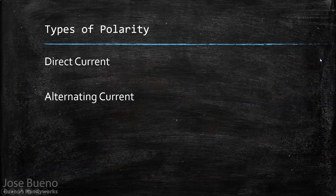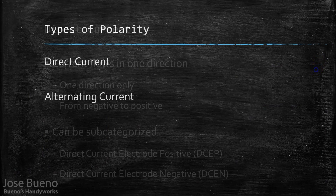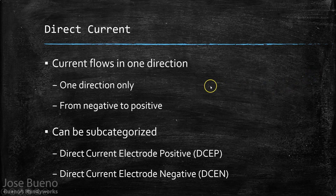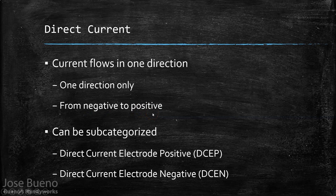There are two main types of polarity: direct current and alternating current. In direct current, electricity or current flows in one direction and one direction only, and the electricity always flows from the negative terminal to the positive terminal. Direct current can be broken down into two subcategories: direct current electrode positive and direct current electrode negative.